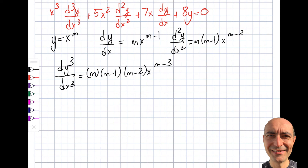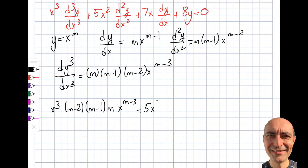Let's get to business — just plug this here, plug that there, plug this here, and this there, and let's see what happens. It's going to be long, but that's okay. We get m(m−1)(m−2)·x^(m−3) plus 5x²·m(m−1)·x^(m−2) plus 7x·m·x^(m−1) plus 8·x^m is equal to zero.